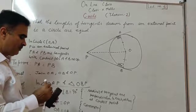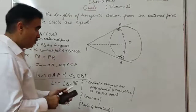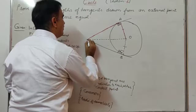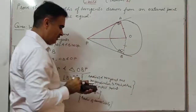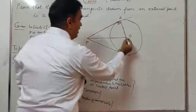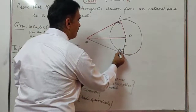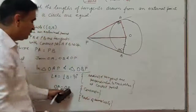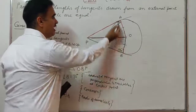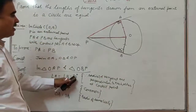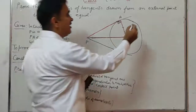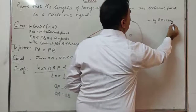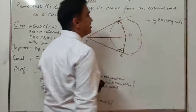So in these two triangles, we have: one side common, both radii equal, and both angles equal to 90 degrees. We have the right angle, the hypotenuse, and the equal radius side. So by the RHS congruence rule, triangle OAP is congruent to triangle OBP.